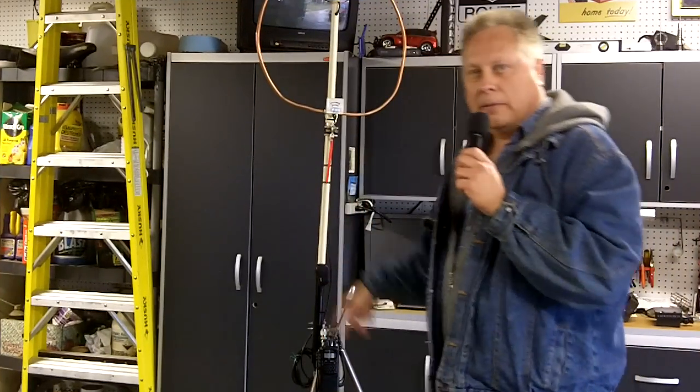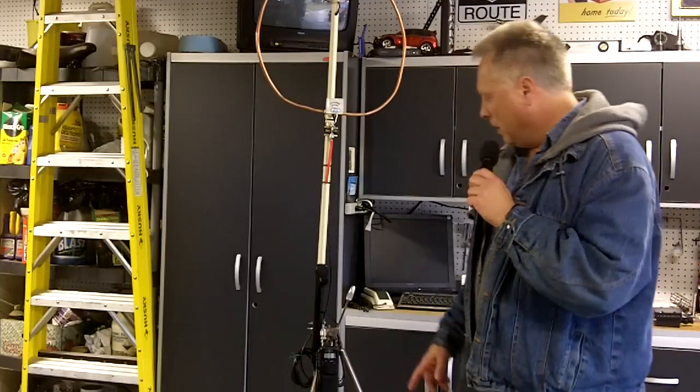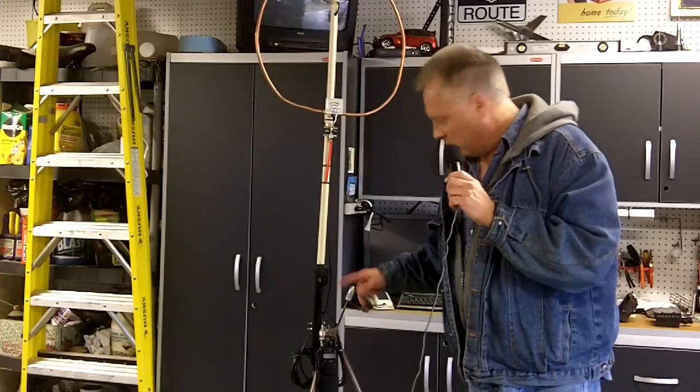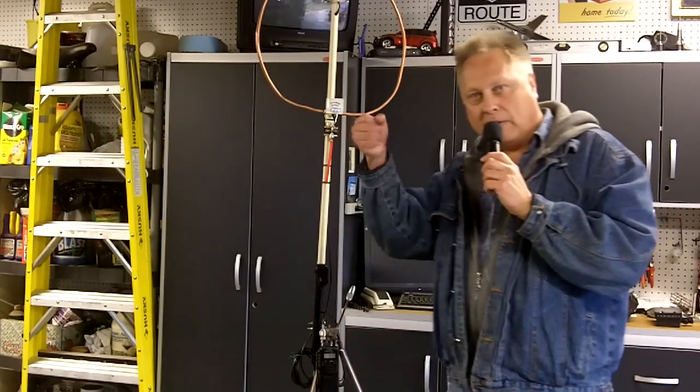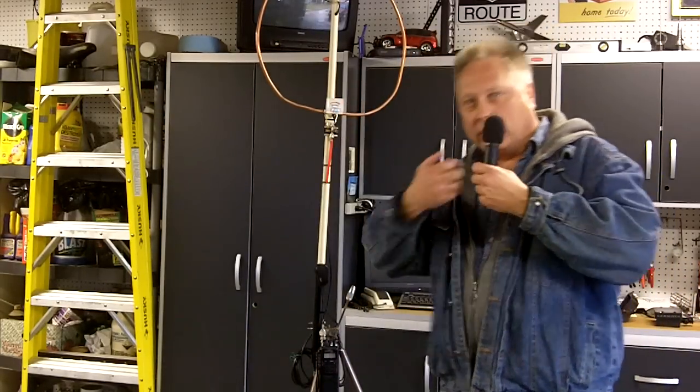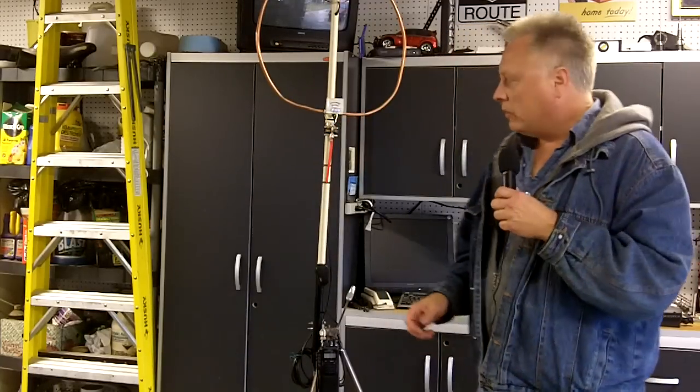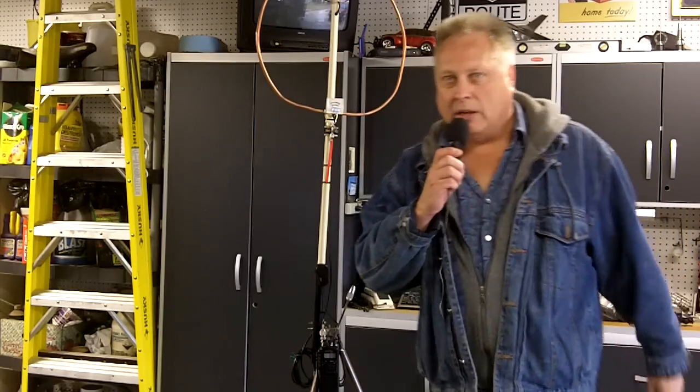So basically, I just want to do a little update here. Since the video where I built the loop, I'm now using it with the 10 meter radio here. So I just want to show you the mount I come up with on a tripod. Makes it a lot handier instead of holding the loop in your hand and trying to talk on the radio microphone at the same time and all that. So anyway, I can just park it and talk on the mic. Makes it a lot handier.